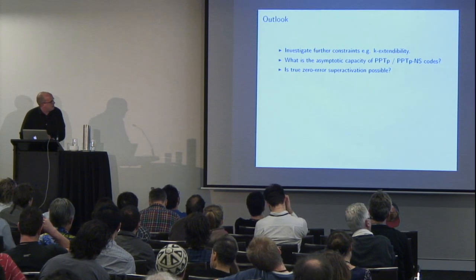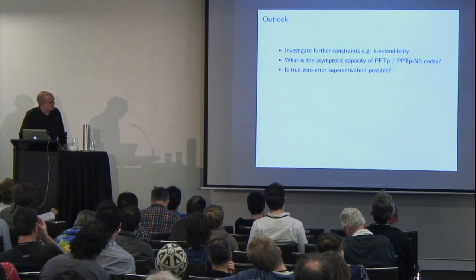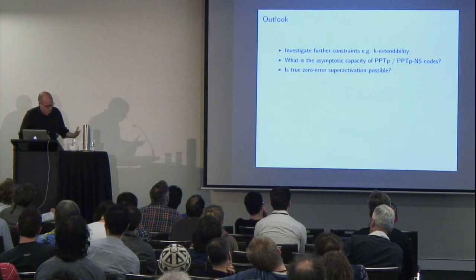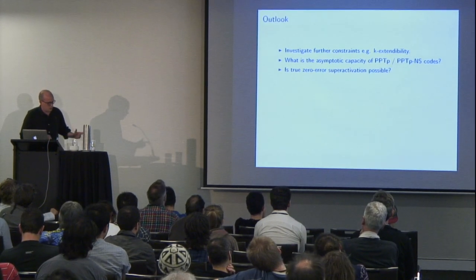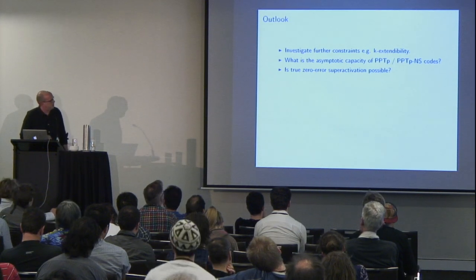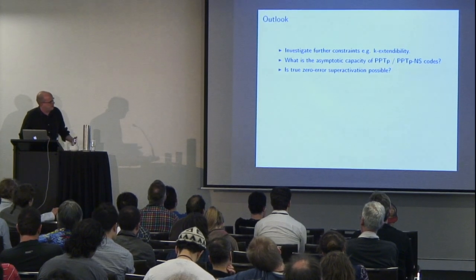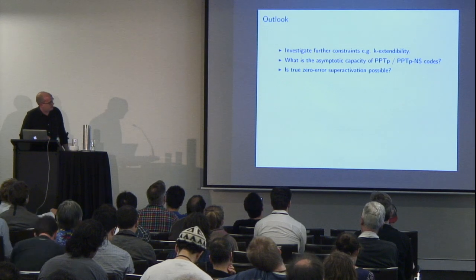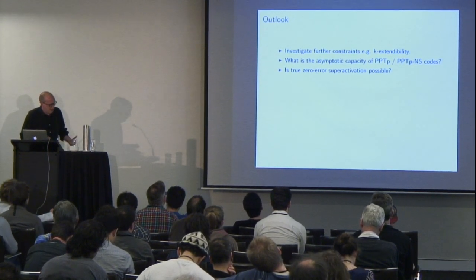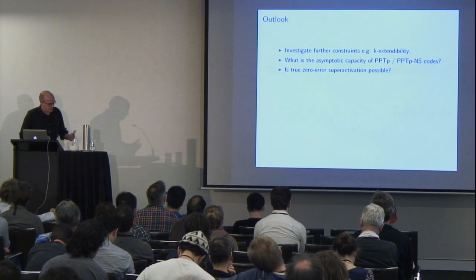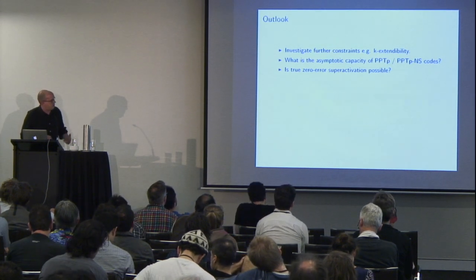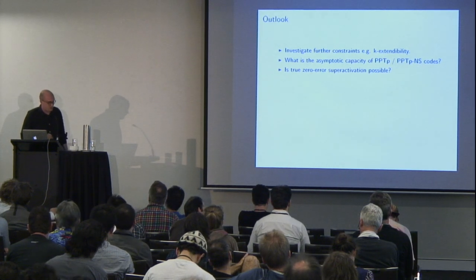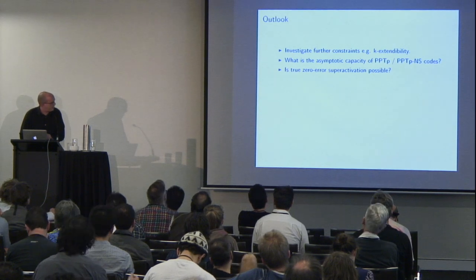Open things to do: one would be to investigate adding further tractable constraints, such as some sort of k-extendability on the code. I believe you should be able to have a sequence of constraints converging to local operations and shared randomness, though they'll get increasingly expensive to compute. It would also be interesting to work out the asymptotic capacity of these kinds of codes — this would tell us when the bound is going to be really poor or quite good. It would also be interesting to know if true zero-error superactivation is possible: can one have forward Horodecki channels enabling zero-error quantum communication over, for example, the two-dimensional Werner-Holevo channel?